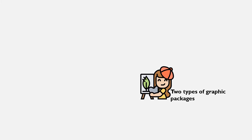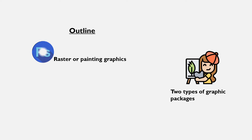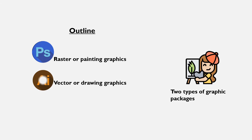Computer graphic packages can be classified into two main groups: raster graphics software and vector graphics software. Let us look at each of the two types with examples.